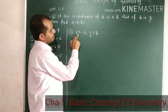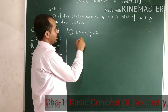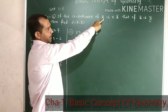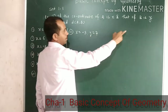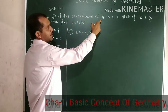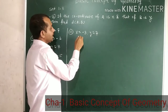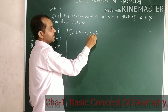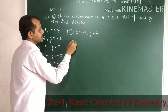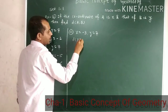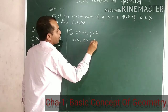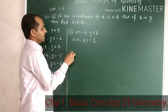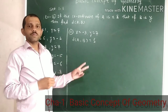Example number 3: x is equal to minus 3 and y is equal to 7. x represents point A and y represents point B. The coordinate of A is minus 3 and the coordinate of B is 7. Find the distance between points A and B.